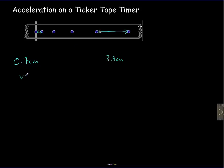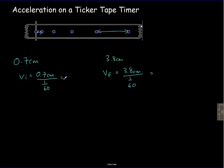The initial speed is the distance traveled — 0.7 centimeters — divided by the time between dots, which is 1/60th of a second. We do the same for the final speed: 3.8 centimeters divided by 1/60. Effectively we're multiplying by 60 in both cases. 0.7 × 60 gives 42 centimeters per second; 3.8 × 60 gives 228 centimeters per second.